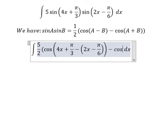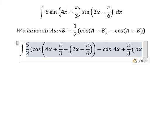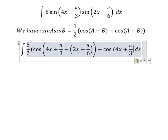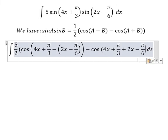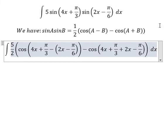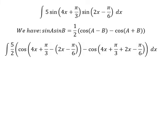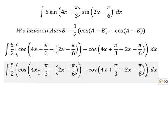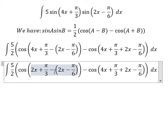Minus cosine of this one plus this one. Now we have 4x minus 2x, so we have 2x in here. π over 3 minus negative π over 6, we have π over 2.